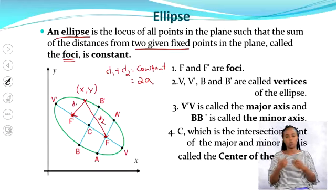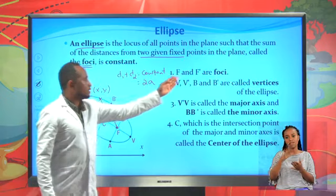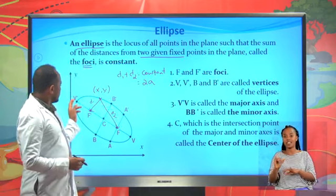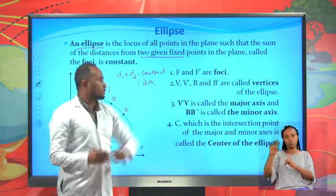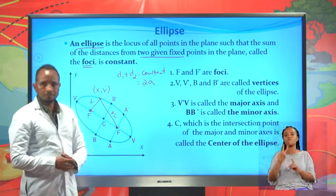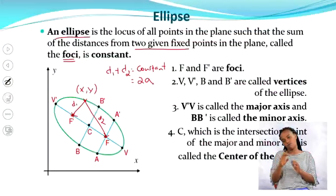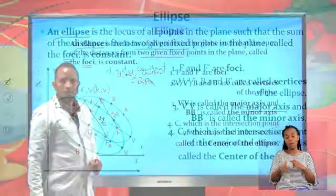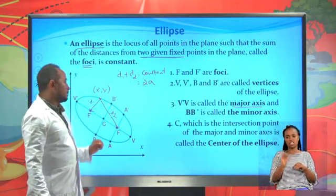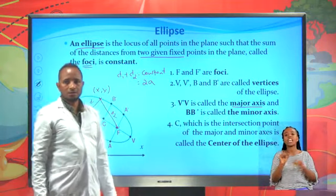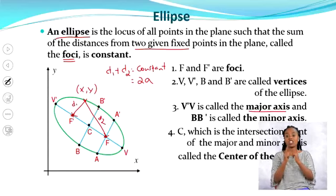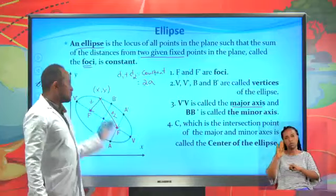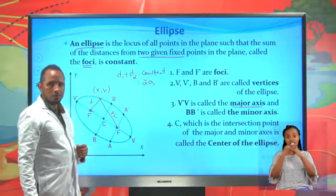Now let's see the terms. Here, f prime and f, we call them foci. And v prime, v, b prime, b — we call them vertices of the ellipse. The largest distance, v prime to v, we call it the major axis. And the smaller distance, b to b prime, is called the minor axis. The intersection point of bb prime and vv prime is called the center of this ellipse.